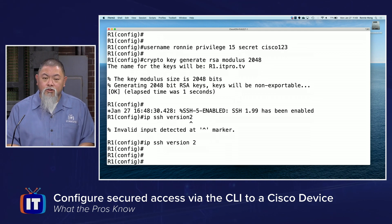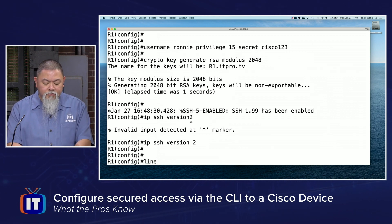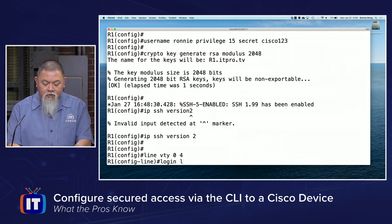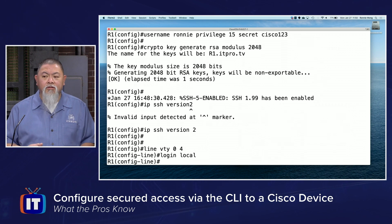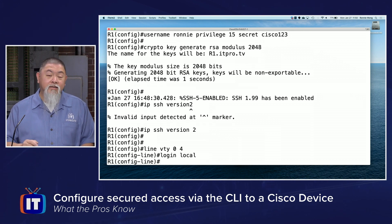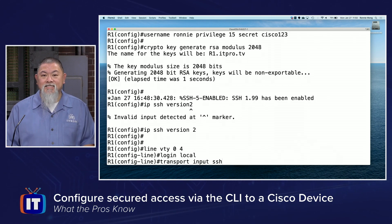Now we're almost done. We've got the encryption set up and all the other things we need. We need to affect our virtual teletype lines, so we type line VTY 0 4, then we tell it to use the username and password database by typing login local. Could it work just like this? It will allow access, but not necessarily securely — it would allow both telnet and SSH. Since telnet is not something we want for secured access, we type transport input SSH to limit it to SSH only.